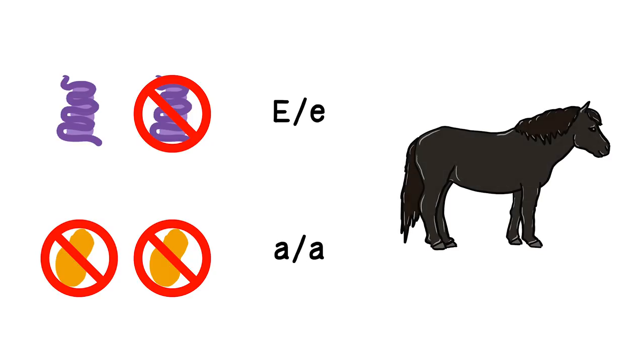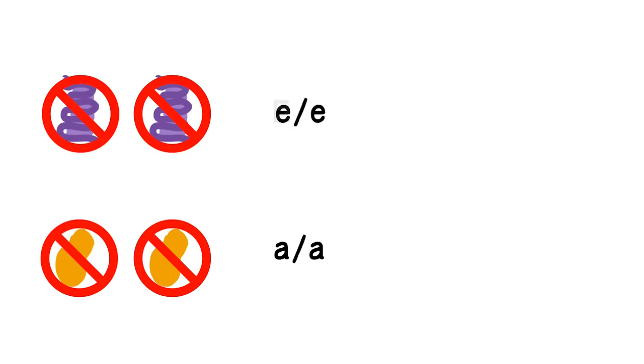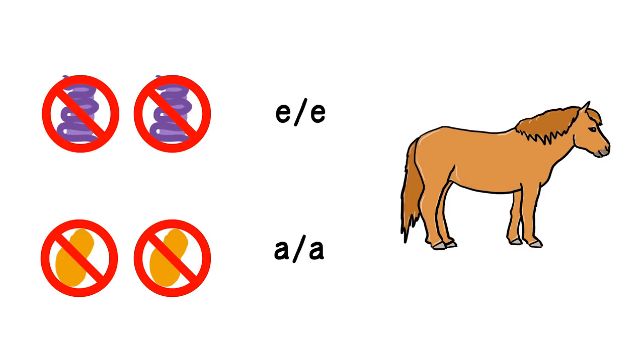If, however, both of the E alleles are broken, alpha-MSH cannot bind, nobody can tell the cell to make black, and the horse is red, whatever its A locus says.